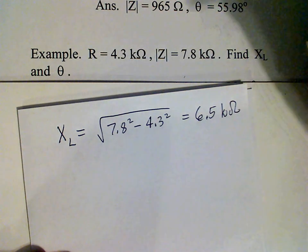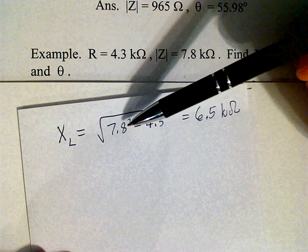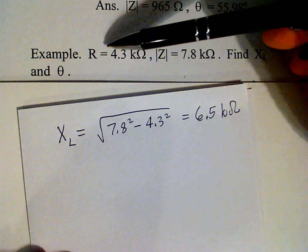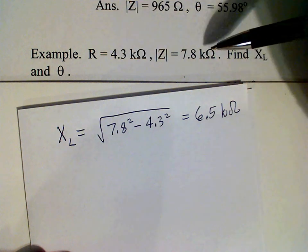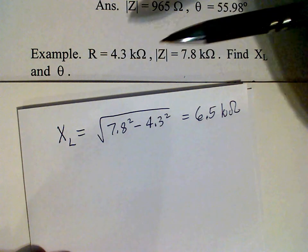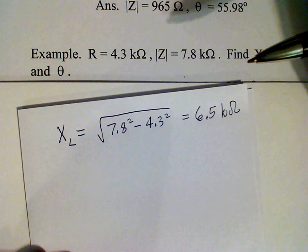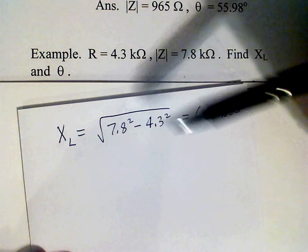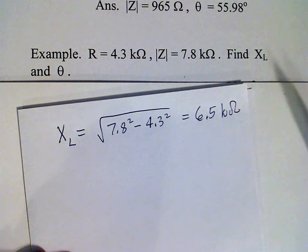By the way, in this example you notice that I did not bother putting the K's in here. Because both the resistance and the reactance are given in units of kilo ohms, then we know the answer is going to come out in kilo ohms too without having to put the K in there. It just saves a step.